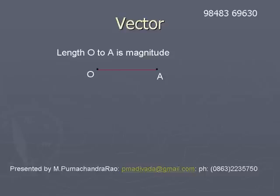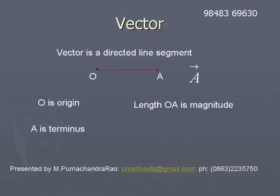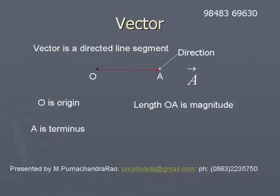The length of the line segment O A is called the magnitude of the vector.